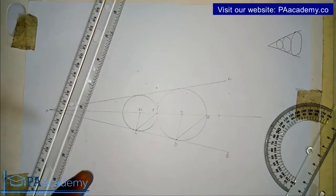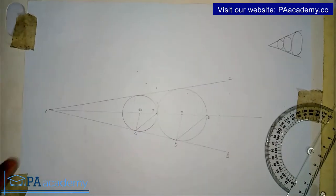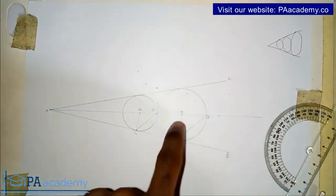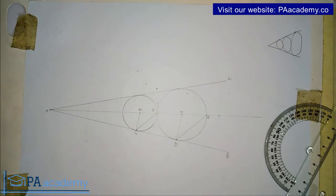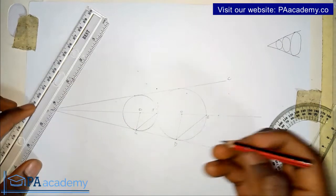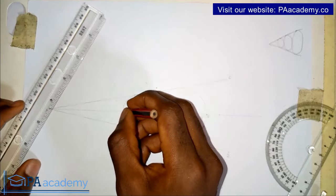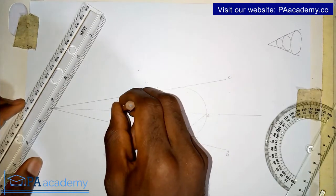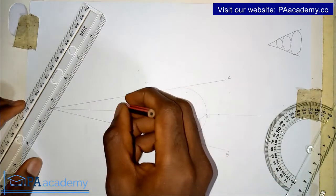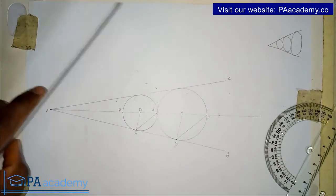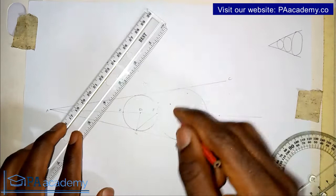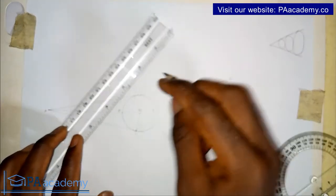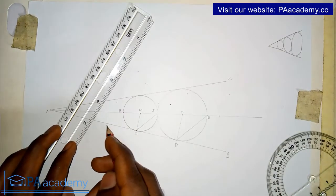You can see we already have our second circle touching line AC, touching line AB, and touching the first circle. To draw a third circle, we follow the same steps. Let's call the point where the bisector touches the second circle on the far side point H. From point H, draw a line parallel to FG — that is, parallel to this line FG — from point H to a point on line AB.